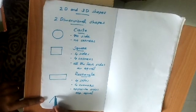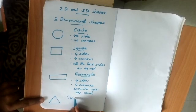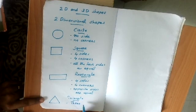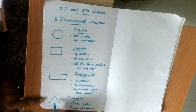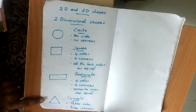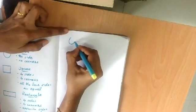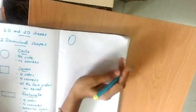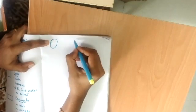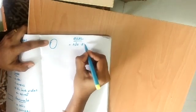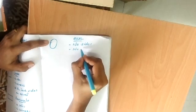The next shape is a triangle. In a triangle there are three sides and three corners. One more 2D shape is the oval shape, like an egg. An egg is an example of an oval shape. The oval has no sides and no corners, just like a circle.